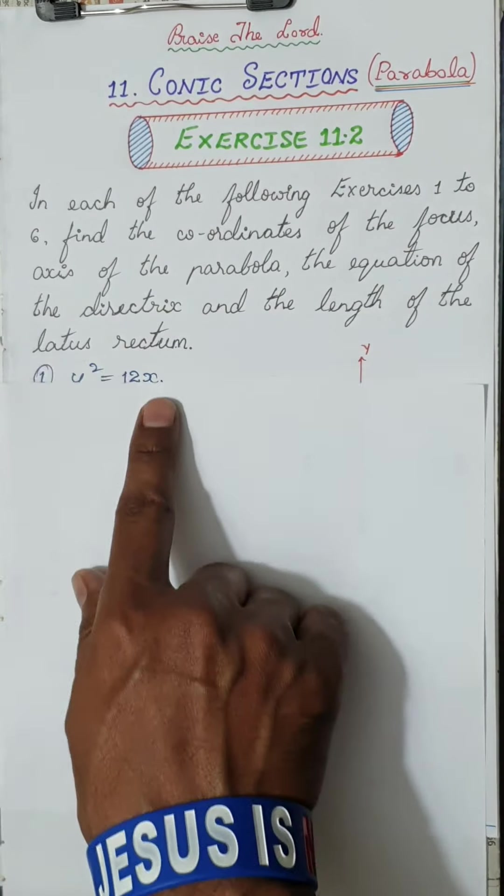Length of the latus rectum is 4a, same for all four parabolas. The ends of the latus rectum for the right-facing parabola are (a, 2a) and (a, -2a) — that is (a, ±2a). Point (a, 2a) lies in the first quadrant and (a, -2a) in the fourth quadrant. These are the required parameters or characteristics of the parabola.